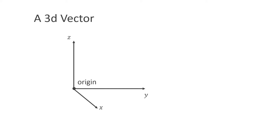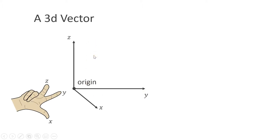In order to be able to work in three-dimensional space, we need a coordinate system. Here we have the x and y-axis on the ground and the z-axis pointing upwards. We typically use a right-handed coordinate system, which means if the x-axis points along the thumb and the y-axis points along the index finger, then the z-axis points along the middle finger.